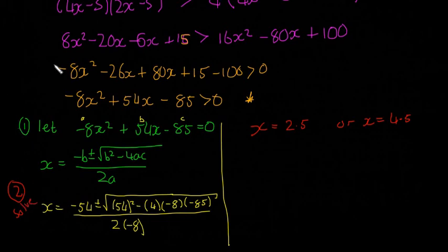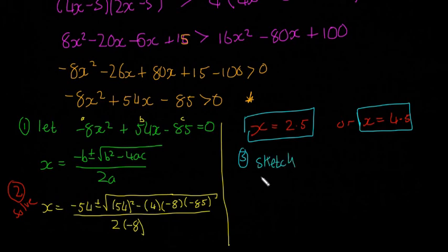Then step three is to sketch. So if we sketch that, it's also going to be an n here, so just be careful there. It's going to be an n in this case because it's minus x squared. So it's going to be something quite like that. So that's going to be 2.5, and that's going to be 4.5.